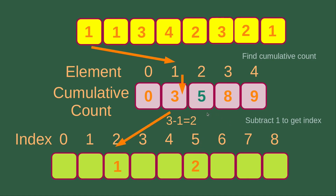After the subtraction of 1 from the original cumulative count, the new cumulative count for element number 2 becomes 5. Then I'm going to put the second element of the unsorted list, which is 1. We can see that element 1 has a cumulative count of 3. And then I subtract 1 from 3 to get 2, so the index position of element number 1 is index number 2. So I put this element to index 2 position of the final answer.